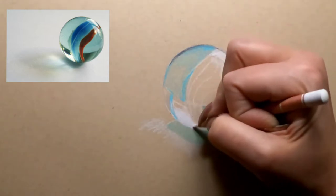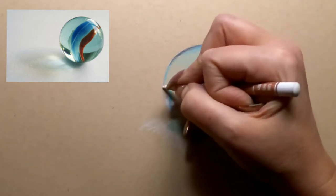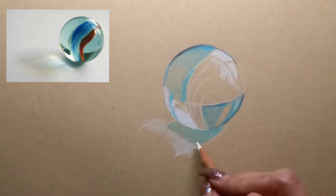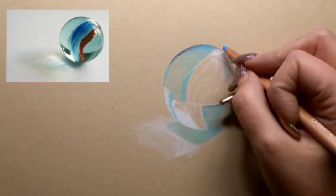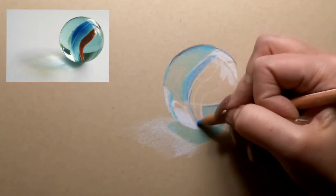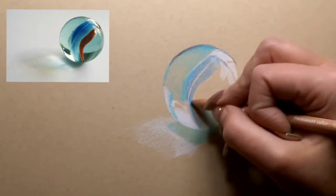So we're gonna map in where all of our bright highlights are with the white pencil, still using light layers, and I'm going to add in where some of that reflection is on the surface that it's sitting on.